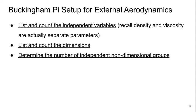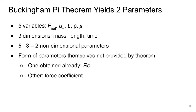So for external aerodynamics, we can do our Buckingham Pi setup. First, you need to list and count the independent variables. Recall that the density and the viscosity are actually separate parameters. List and count the dimensions, and then determine the number of independent non-dimensional groups. So we've got five variables: the net force on our object, the incoming velocity u infinity, the length scale L, the density rho, and the viscosity mu.